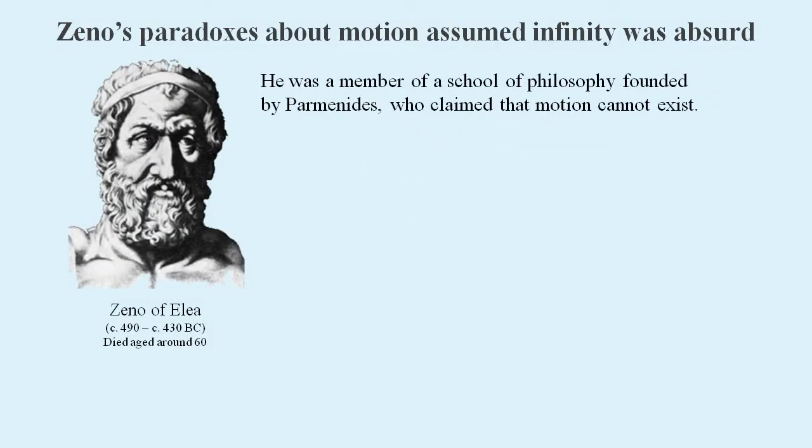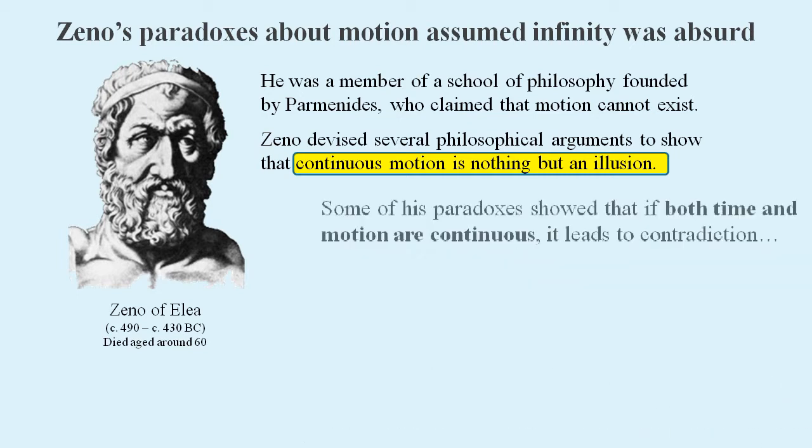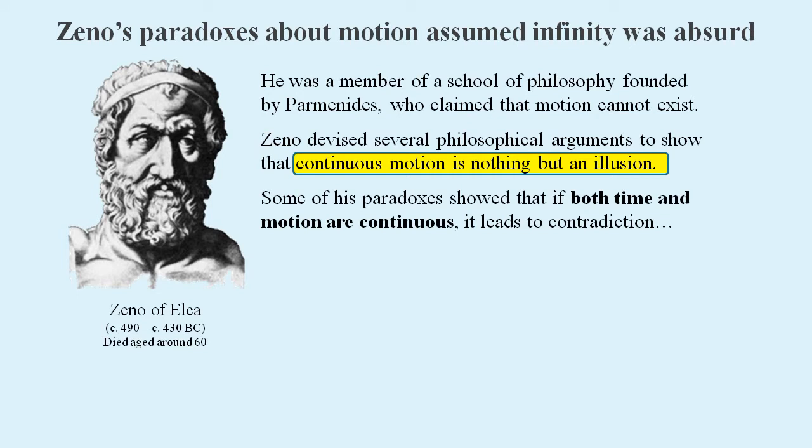Zeno was trying to make the point that motion can't happen. He devised several philosophical arguments to show that continuous motion is nothing but an illusion. Many of his paradoxes showed that if both time and motion are continuous, it leads to contradiction.